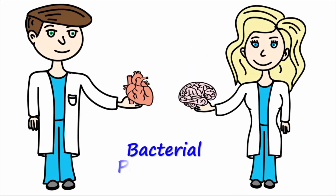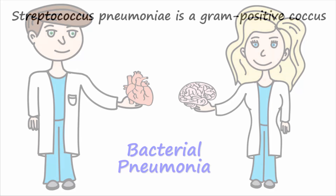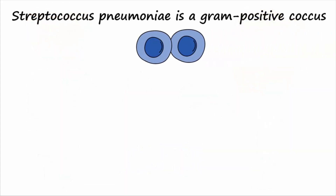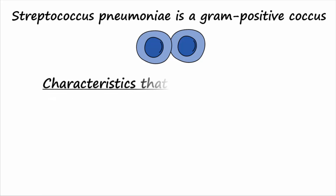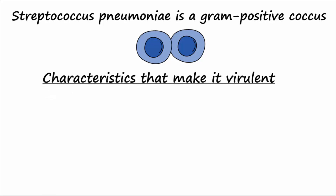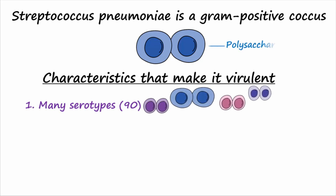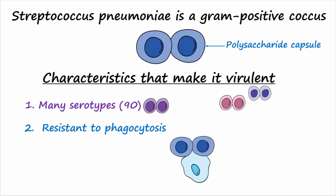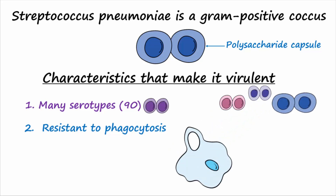Our topic today is bacterial pneumonia. Streptococcus pneumoniae is a gram-positive diplococcus — diplo meaning it occurs in pairs. Several characteristics make this bacteria quite virulent. First, Streptococcus pneumoniae has at least 90 serotypes. It also has a polysaccharide capsule which makes it resistant to phagocytosis. Finally, it secretes a toxin called pneumolysin which forms pores in eukaryotic cells, causing them to lyse.